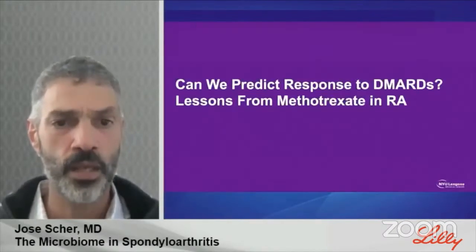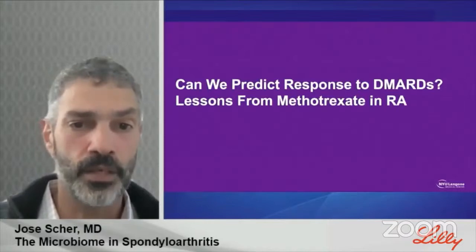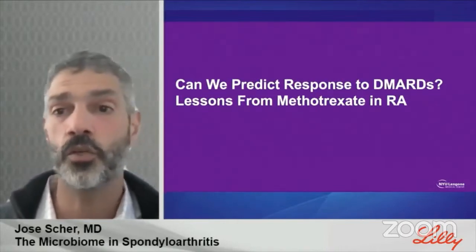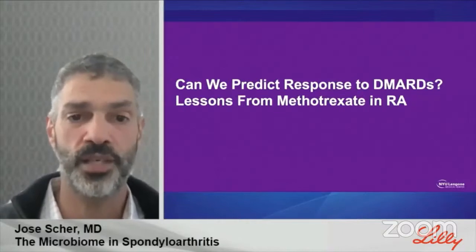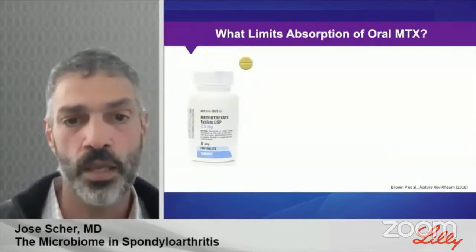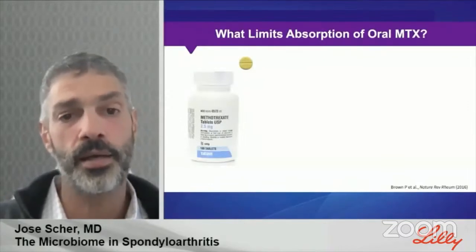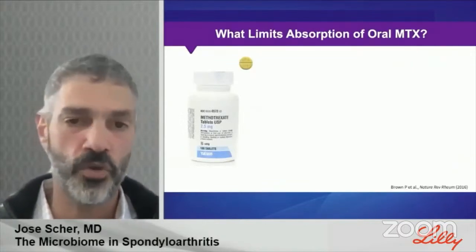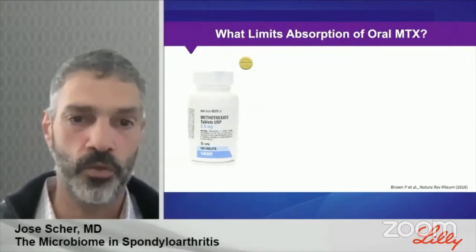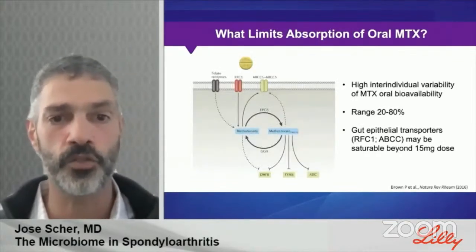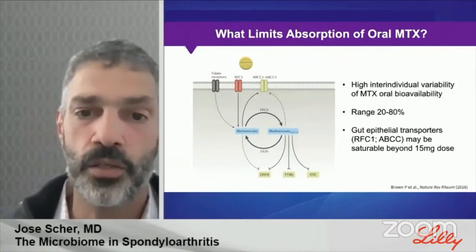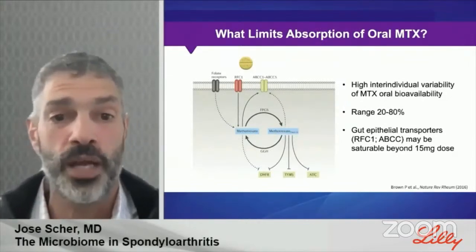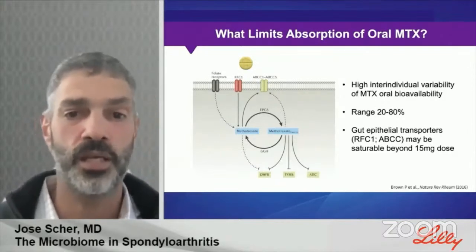Finally, the question: can any of these be applied to clinical decision-making? The lessons we are learning from methotrexate in rheumatoid arthritis are significant. We've learned a great deal about the metabolic fate of methotrexate. Once patients ingest this drug, there is an established and very high inter-individual variability in methotrexate oral bioavailability, ranging anywhere from 20 to 80 percent depending on the study and the population.